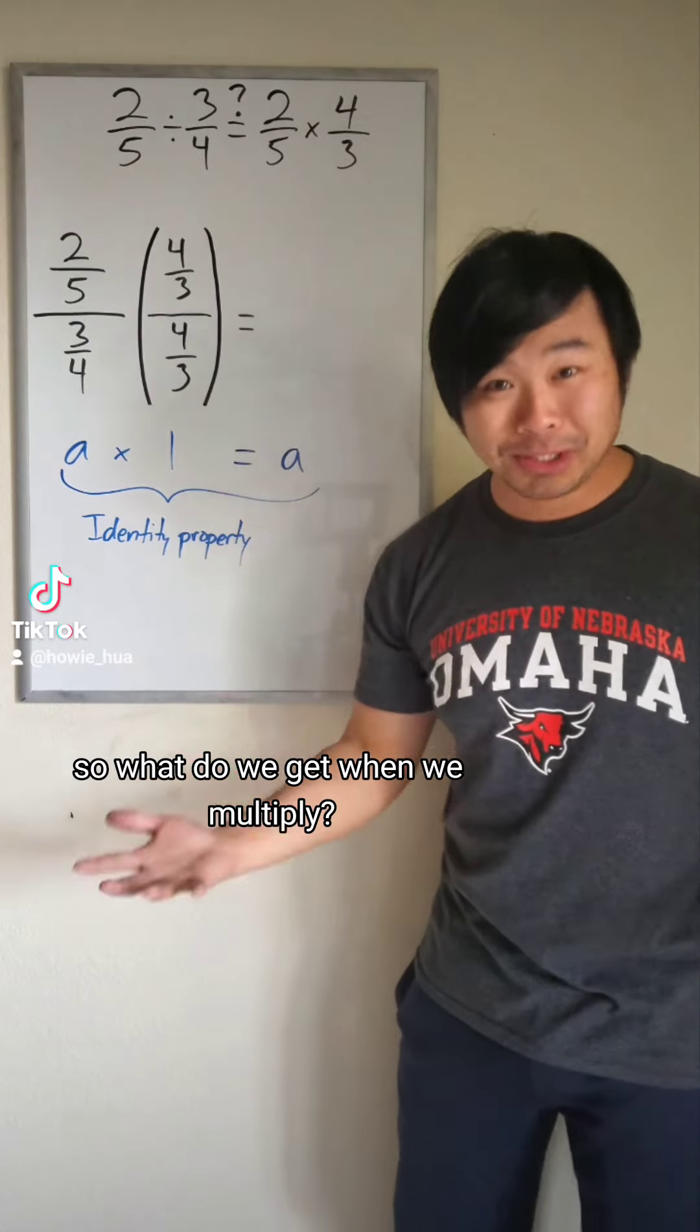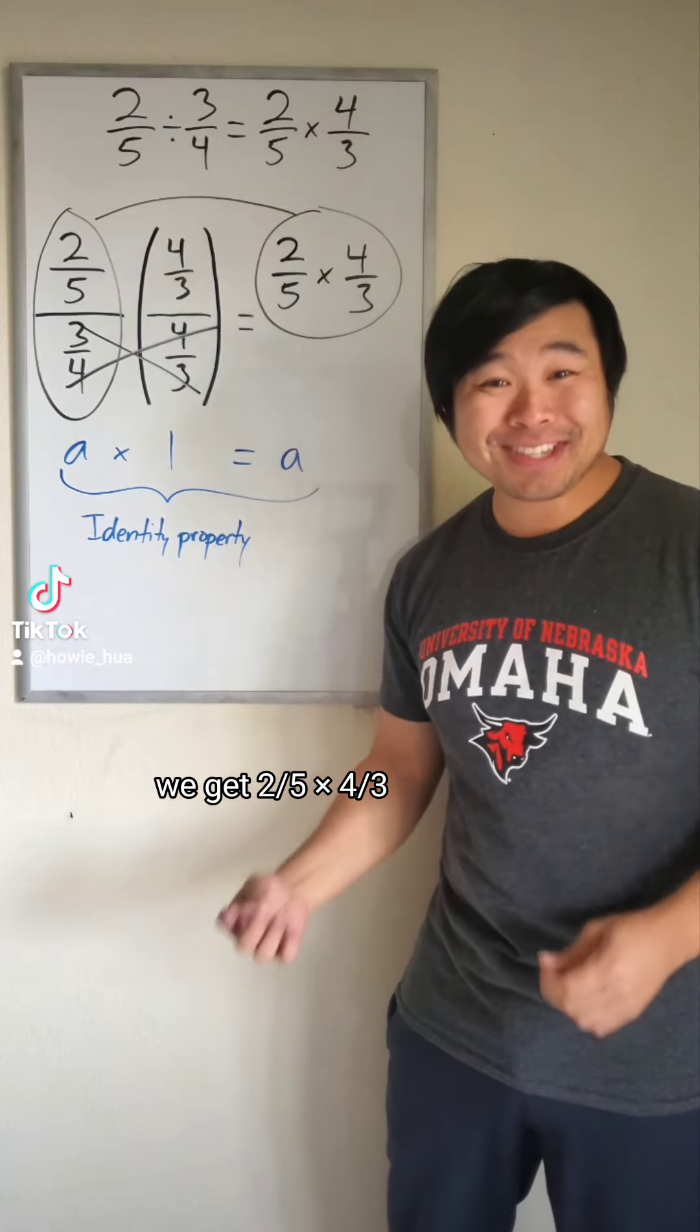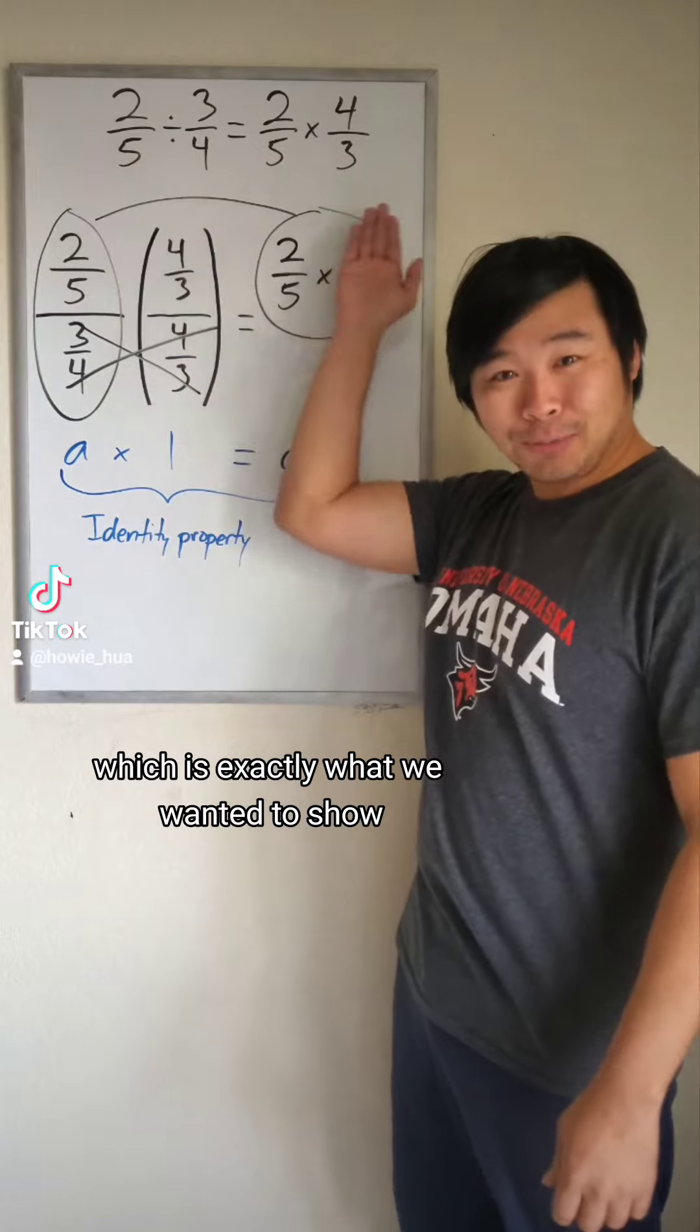So what do we get when we multiply? We get 2 fifths times 4 thirds, which is exactly what we wanted to show.